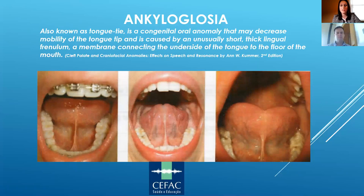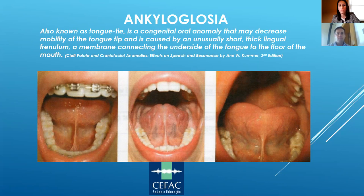Ankyloglossia, also known as a tongue tie, is a congenital oral anomaly that may decrease the mobility of the tongue tip. It is caused by an unusually short, thick lingual frenulum — the membrane connecting the underside of the tongue to the floor of the mouth. It's important to address these frenums because there are a lot of cascading oral and overall health effects that come along with them.